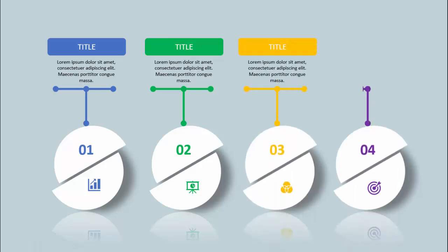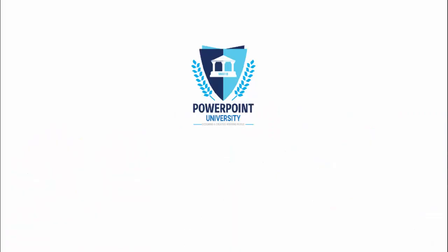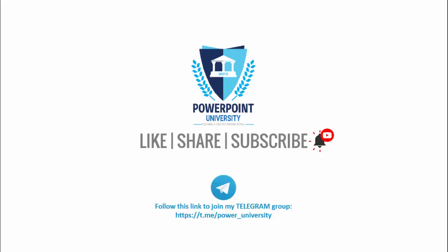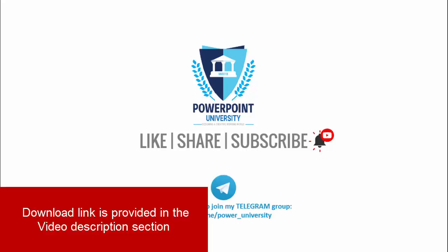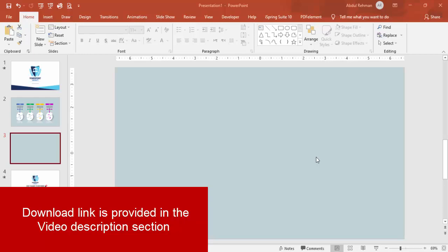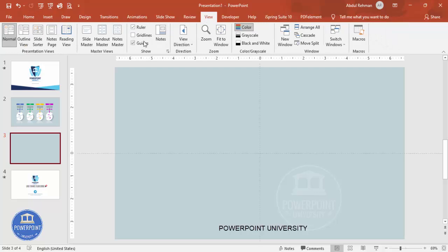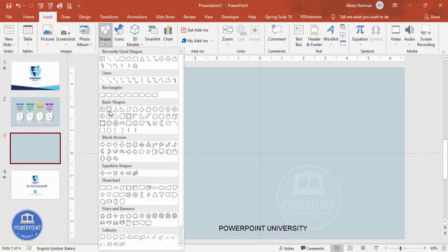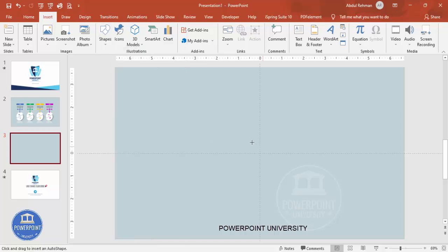If you're not subscribed to my channel PowerPoint University, please subscribe and enable the bell notification icon. You can join my Telegram group with the link provided. I've used Office 2019 version for this tutorial. Let's start — add a new slide, change the background to any light color, then go to View and enable the guides. Go to Insert > Shapes and from the basic shapes choose the oval shape.